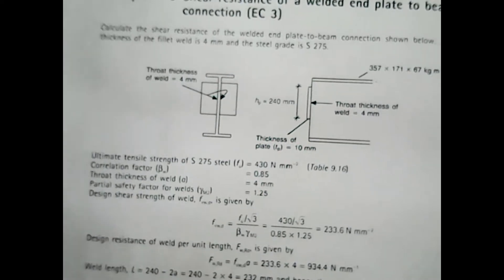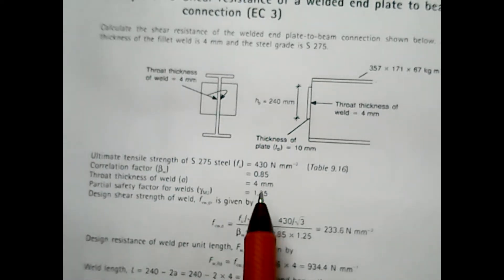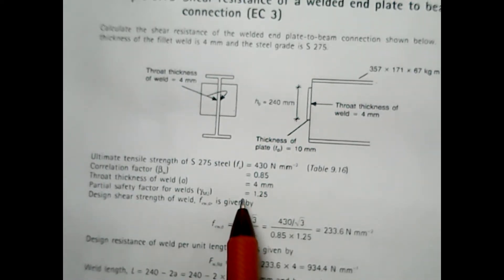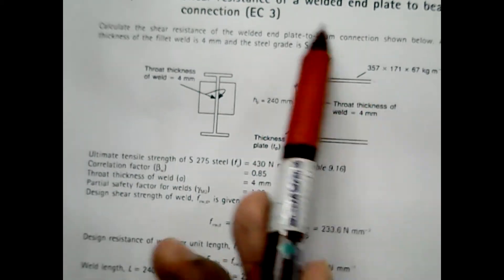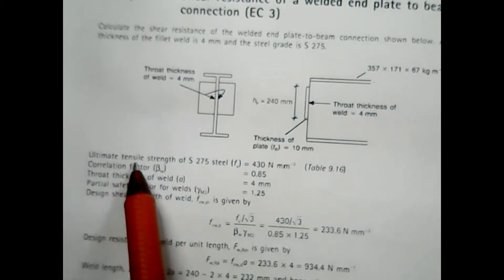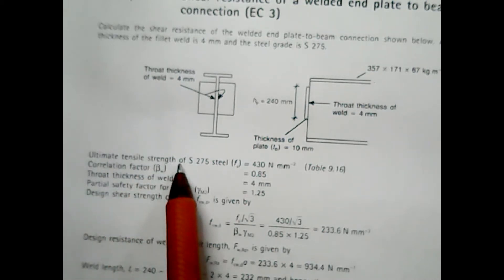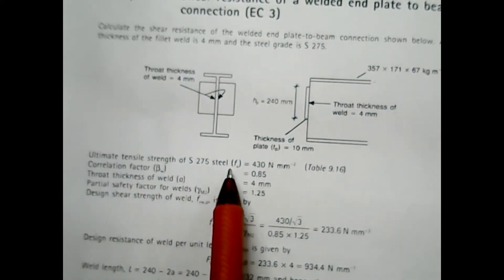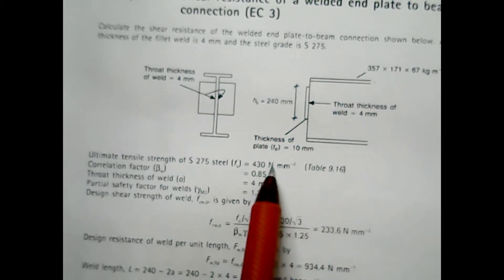In this example, it is already given the required data for this particular connection, whereby the ultimate tensile strength which is grade S275 is 430.